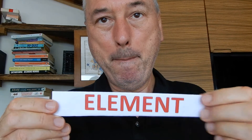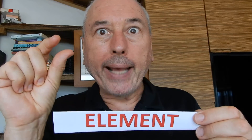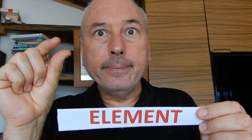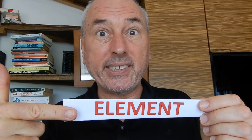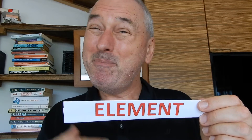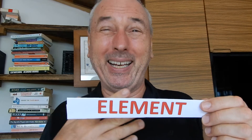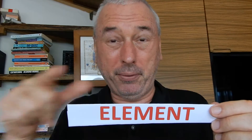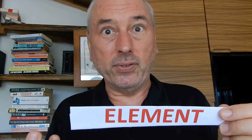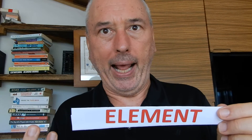Element. One atom. Billions of atoms all the same — billions, trillions, like six with 23 zeros. And then you've started to get an element.